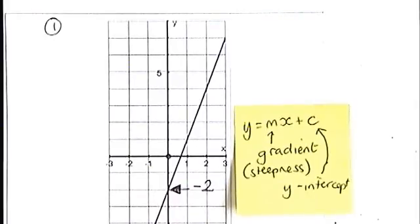So the value of c will be minus 2. The second part, finding the gradient, is more difficult.